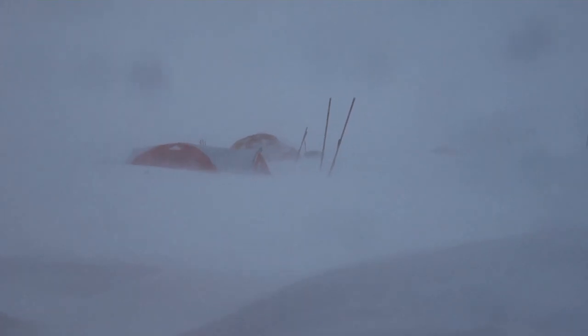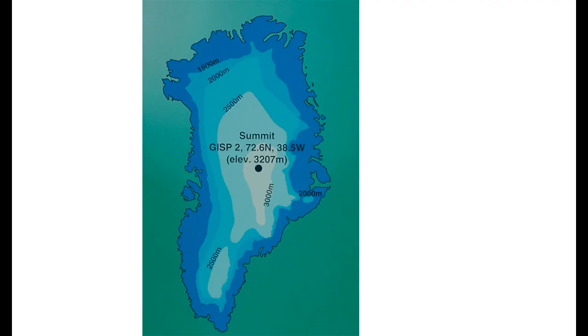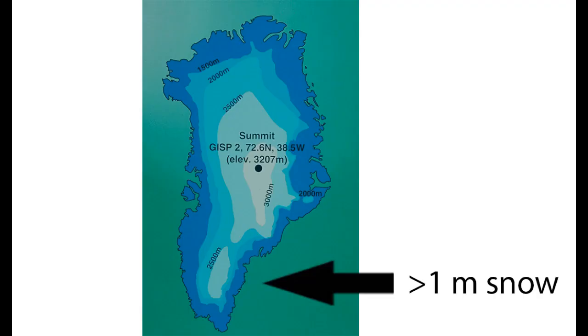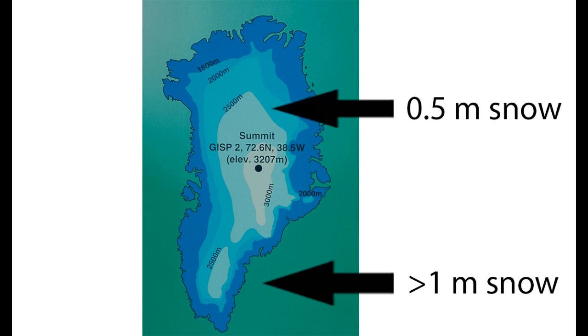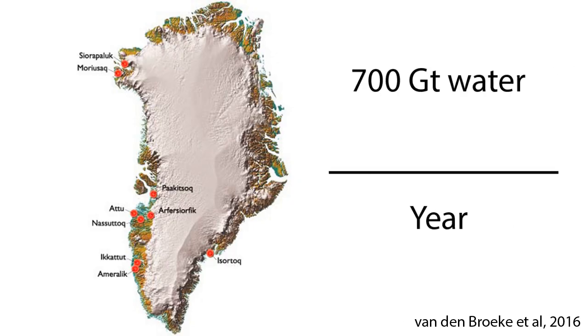Every winter, the entire island of Greenland is covered in snow. The amount of snow varies by place, with the low, wet south averaging several meters of precipitation, and the high and dry interior of the ice sheet only receiving half a meter or so of new snow. Overall, about 700 gigatons of water equivalent in new snow are added to the ice sheet every year, or about 2 millimeters of sea level equivalent.